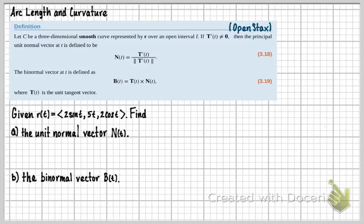So now let's talk about the principal unit normal vector and the binormal vector. Let C be a three-dimensional smooth curve represented by R over an open interval I. Let T prime not equal the zero vector, and the principal unit normal vector at T is defined to be T prime T over the magnitude of T prime T.